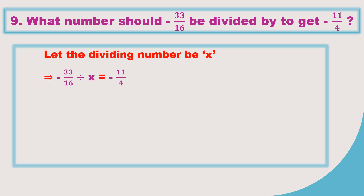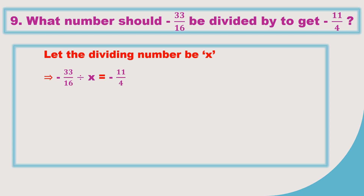By the given condition, we don't know the number, so I took x. So x should be divided with minus 33 by 16 to get minus 11 by 4. When you don't know the number and it is a variable, we cannot do the division directly. So whenever a division is there between two rational numbers, put 'into' instead of division and write the next fraction as its reciprocal. So if it is x, write 1 by x.